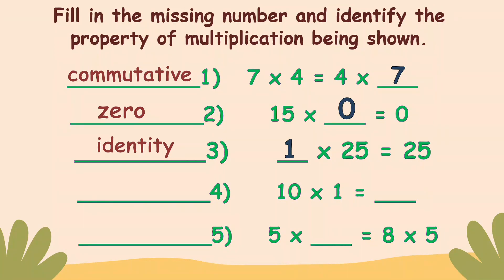Number four: ten times one equals blank. The answer is ten. And that is also identity property.